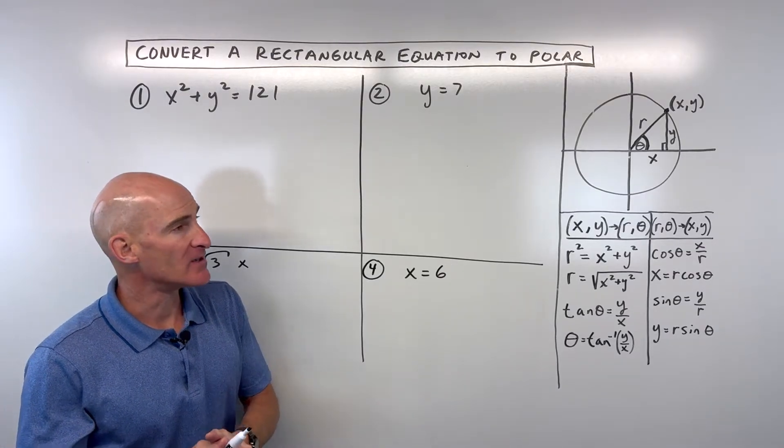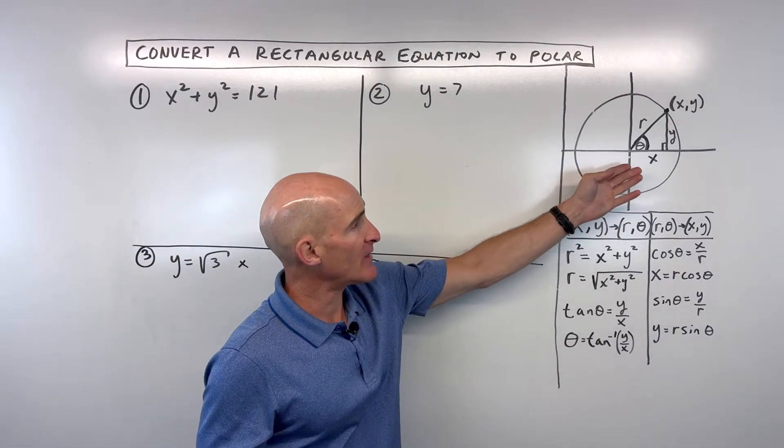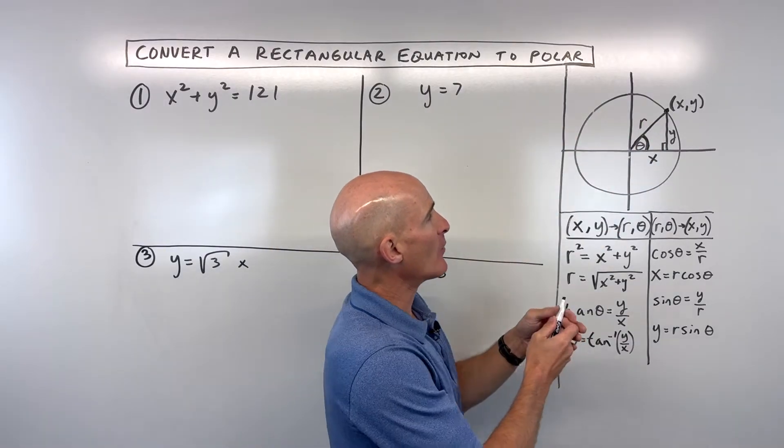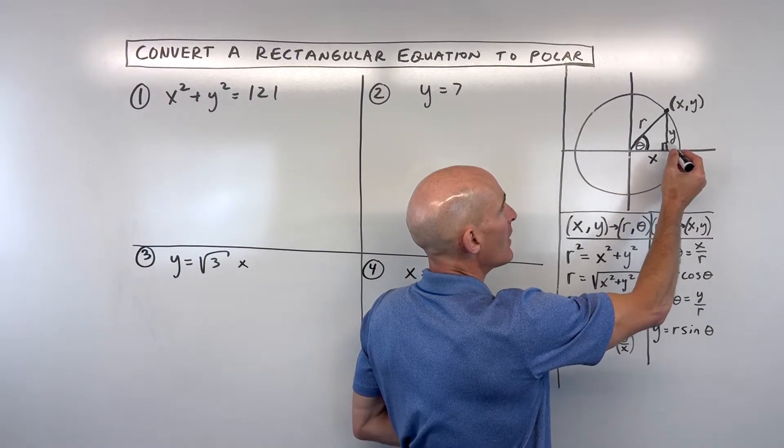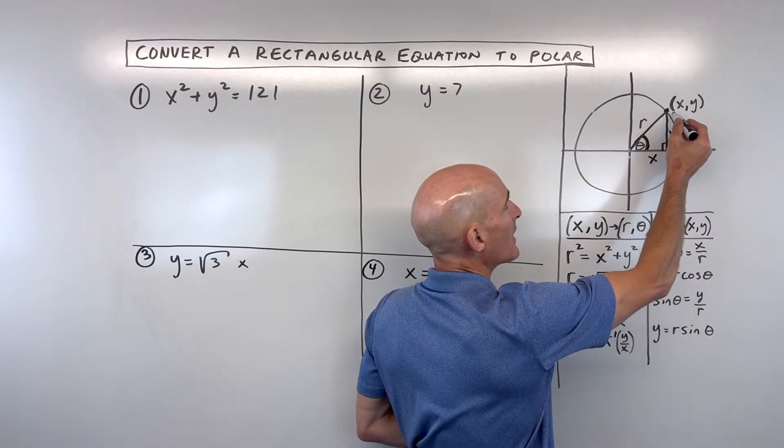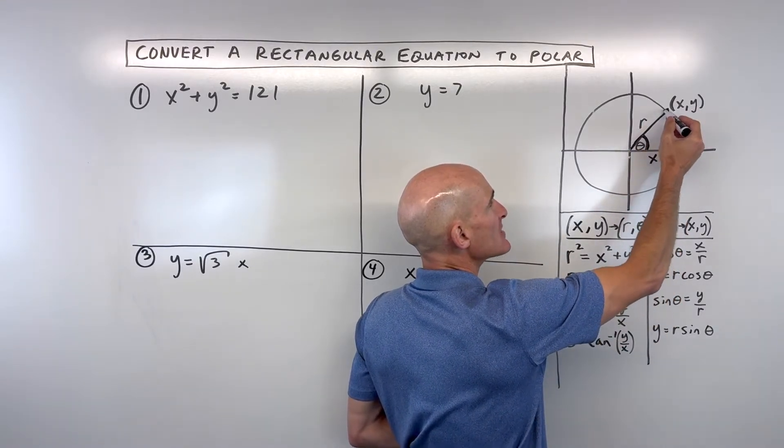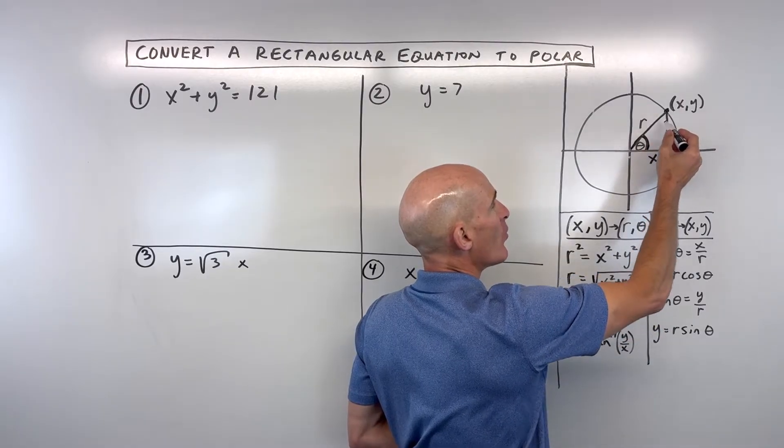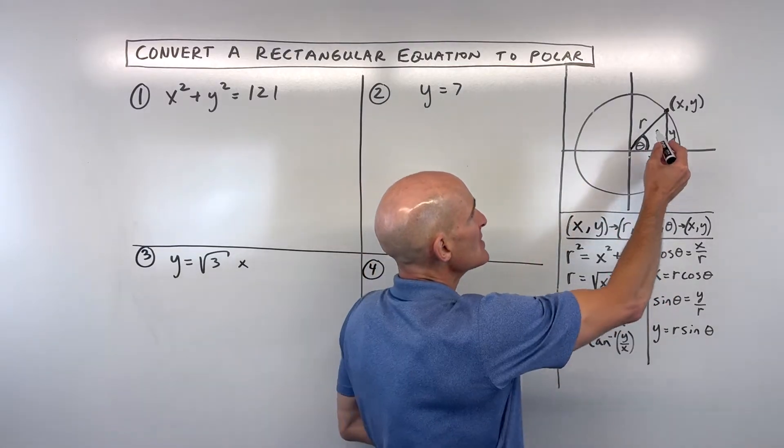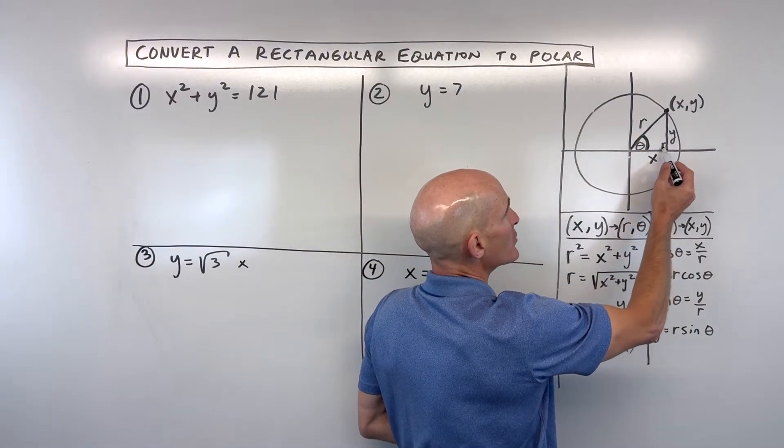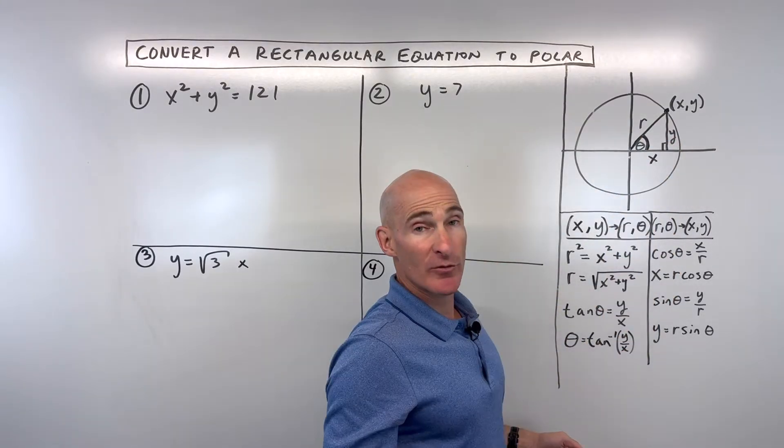The first thing we want to talk about is the relationship between rectangular and polar. That can be seen clearly here in this diagram, where with a rectangular point, we locate that point by going left and right, up and down. That's our point, x comma y. But if we were to draw a radius of a circle out to that point, that r is the distance from the origin to the point, and we have this angle theta, which is our angle of rotation with the positive x-axis. You can see that there's a right triangle that's formed, and we can see this relationship: a squared plus b squared equals c squared, the Pythagorean theorem.